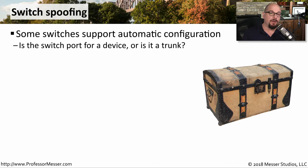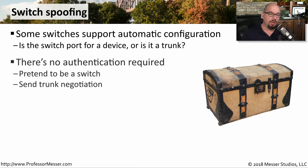Many switches allow you to set up an automatic configuration mode called trunk negotiation. It allows you to plug in a device to a switch, and that switch will determine if the device is a normal access device such as a laptop or computer, or if it might be another switch. This automatic configuration has no authentication associated with it, so you could use specialized software to connect to a switch with this automatic configuration, and instead of being seen as a laptop, you would be considered another switch on the network.